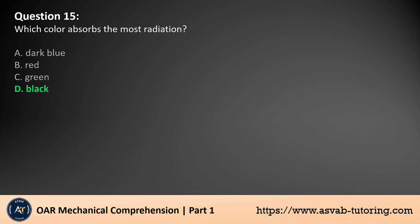Black absorbs the most radiation because it does not reflect light. Instead, it absorbs nearly all the wavelengths of light and radiation that strike it. This absorption converts the radiation into heat, making black objects warmer when exposed to sunlight or other sources of radiation. In contrast, lighter colors and reflective surfaces absorb less radiation and reflect more light.